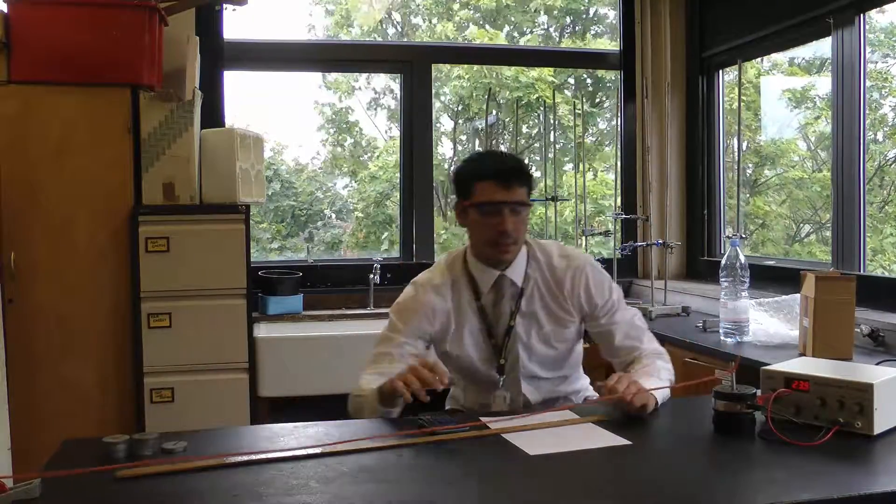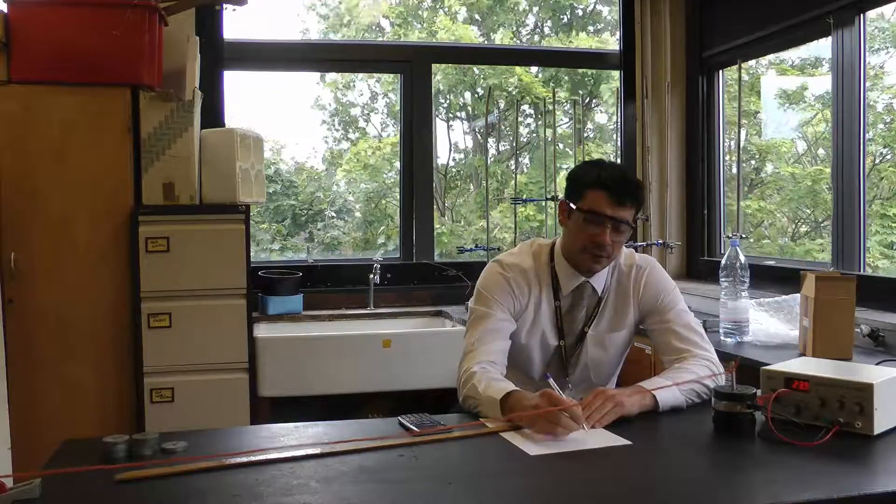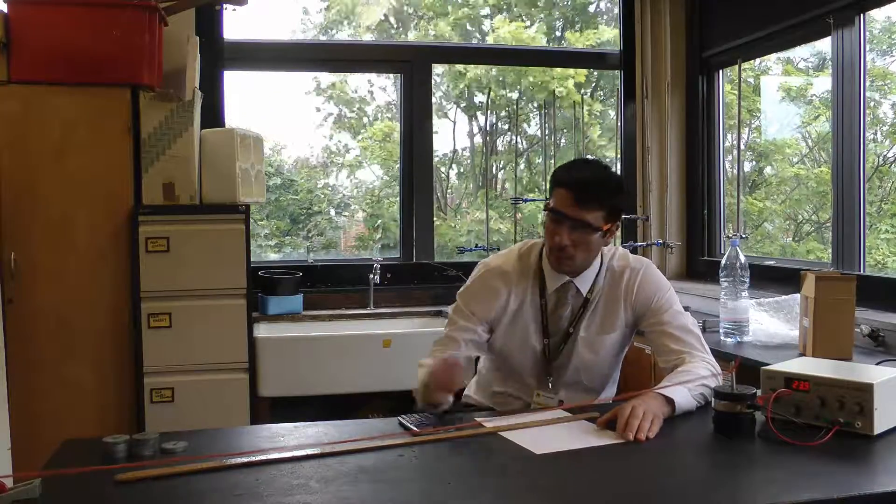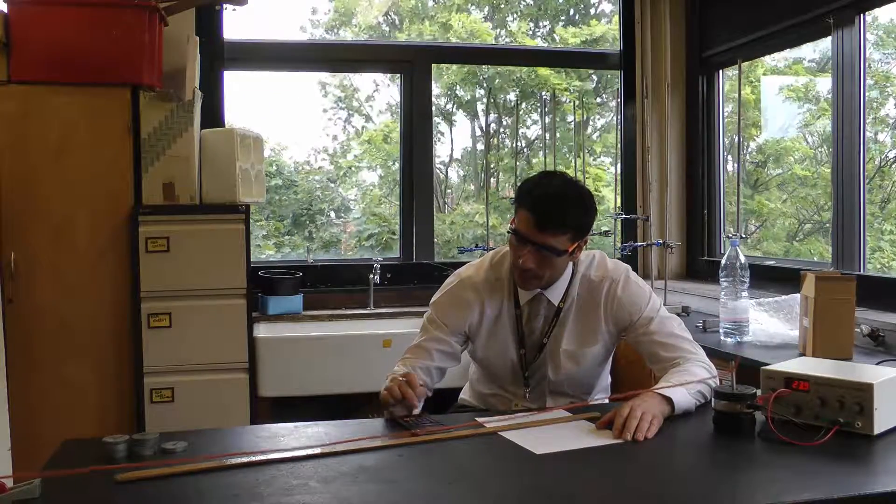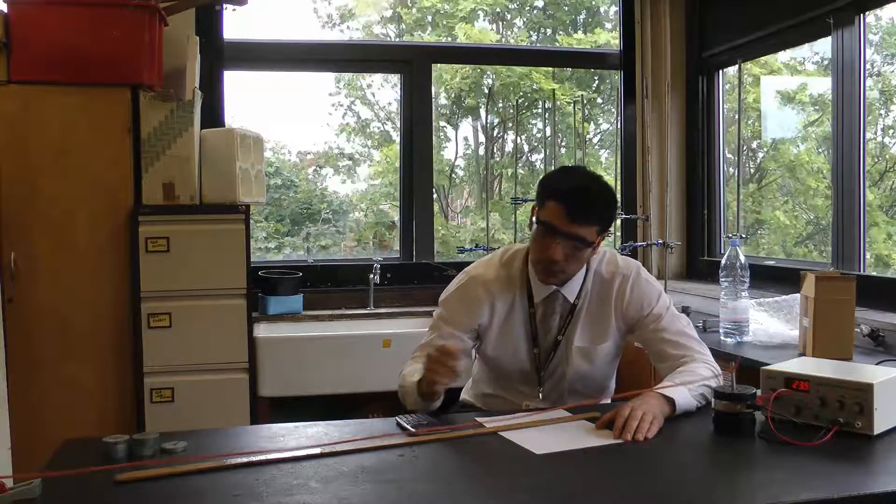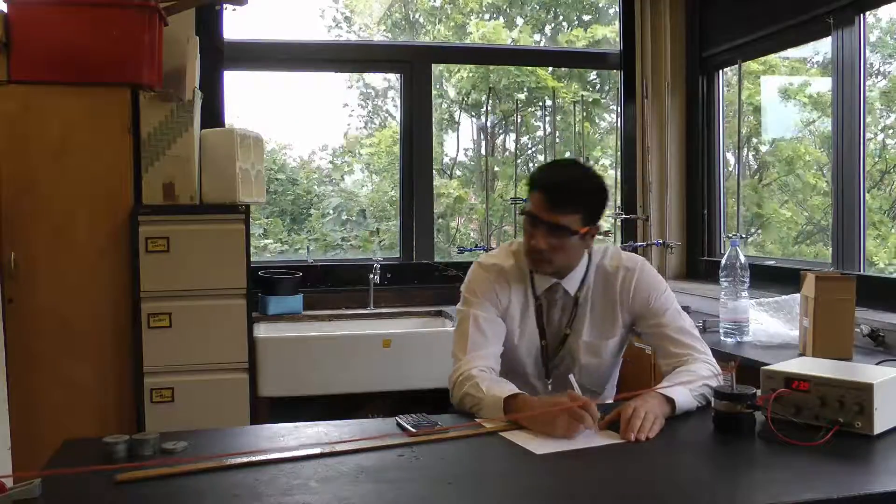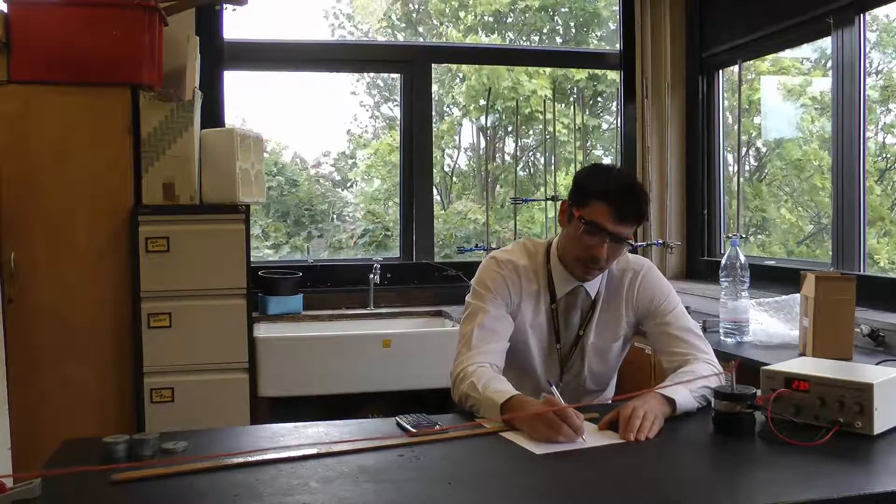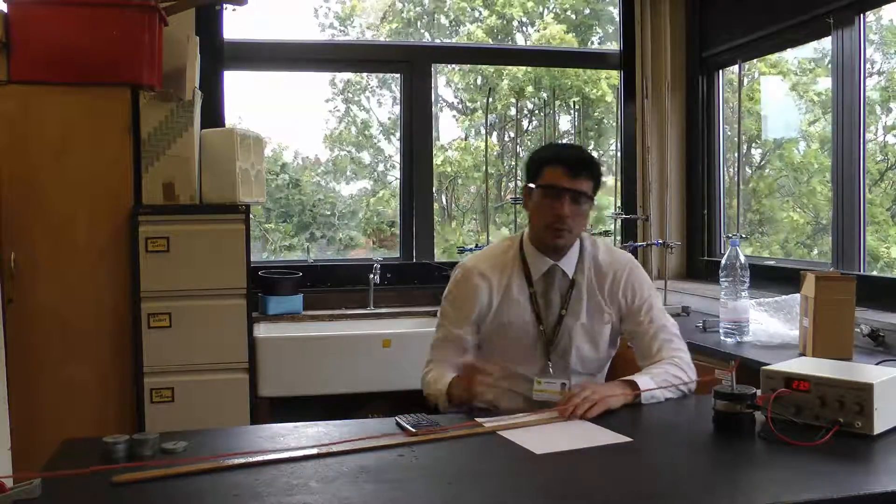If this is 1.38 metres long, I can divide it by 3.5 to get the length of one single wave. So 1.38 divided by 3.5 gets me 39.4 centimetres, or 0.39 metres.